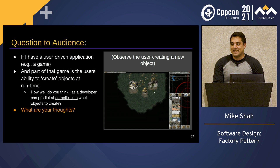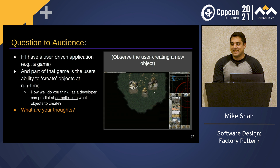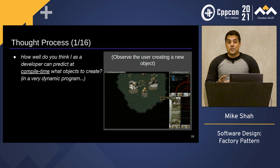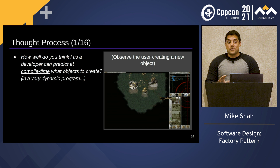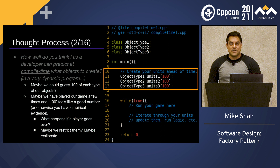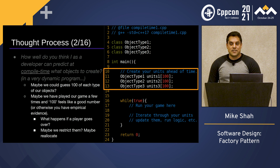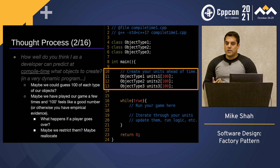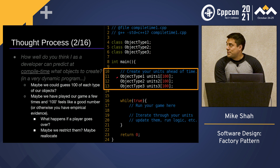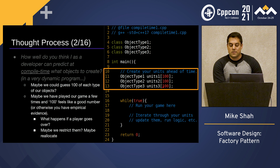Not very well — head shakes from the audience. Especially in a game that's very dynamic, you're going to get lots of different people who play games in different ways or bend the rules. With this in mind, we could try to pre-allocate ahead of time. In this slide, I have object type one, two, and three — named unit1, unit2, unit3 — with 100 units each. A hundred feels like a good number. Maybe we could restrict somebody from having more than 100, or reallocate if they go over that limit.